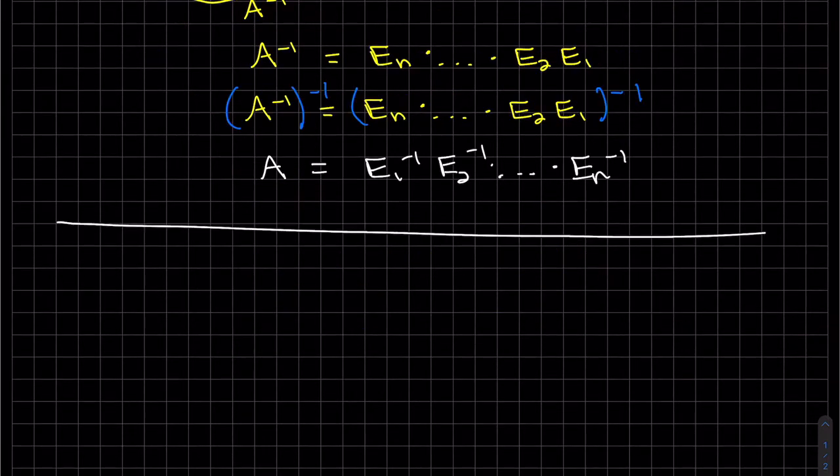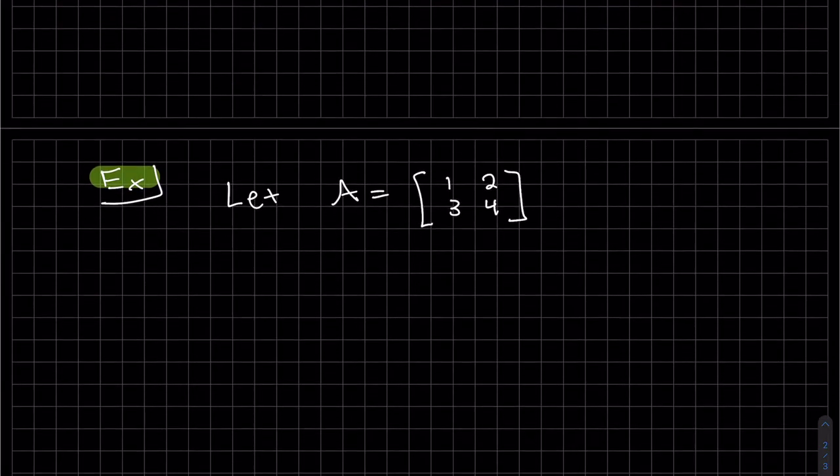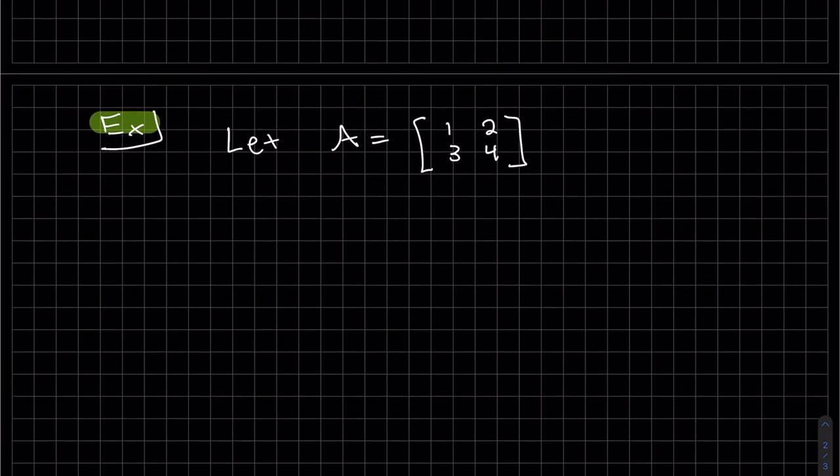Let's look at an example. Remember, the effect of an elementary matrix is to perform an elementary row operation on A. So we can write out the elementary row operations in order to row reduce it to I, and we'll be able to write out the product of elementary matrices. Let's do it.